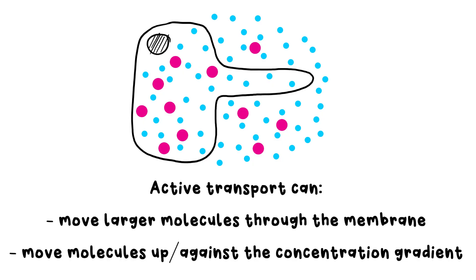This is especially useful for plants, as there's usually a fairly low concentration of minerals in the soil compared to inside the root hair cells. But plants need lots. They can't diffuse in because they have to move up the concentration gradient. Thankfully, active transport is there to help, and the cells use some energy to move them through the membrane to the already higher concentration.